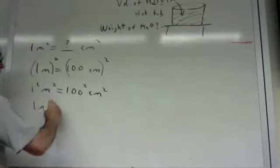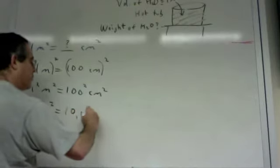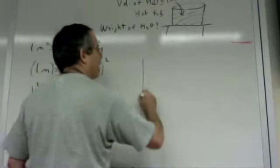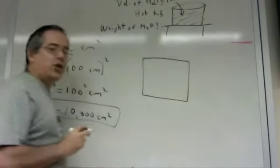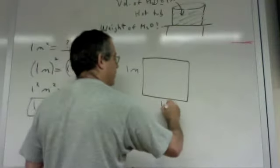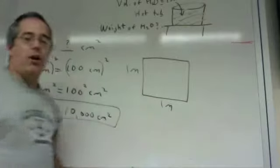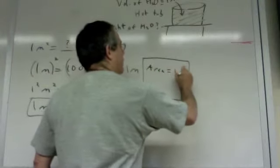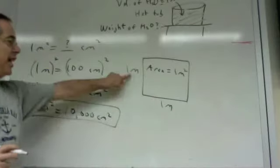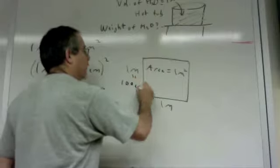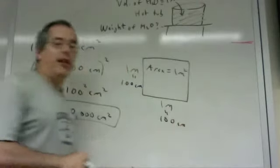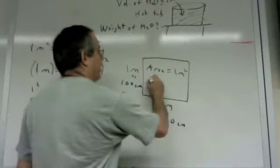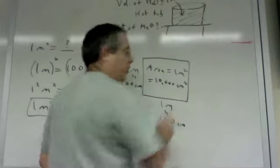So one square meter equals 10,000 square centimeters, since 100 squared is 10,000. One way to see this is to draw a square with a length of one meter on both sides. The area is length times width, which is one square meter. We could also say the sides are 100 centimeters long, so the area in centimeters is 100 times 100, which is 10,000. So the area is also 10,000 square centimeters — exactly what we calculated.